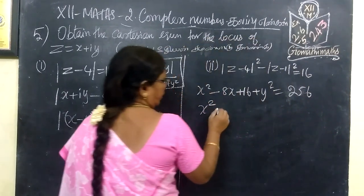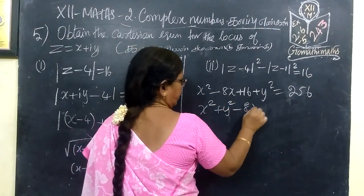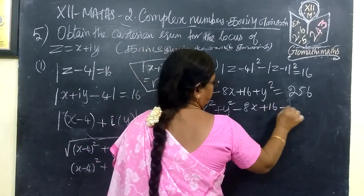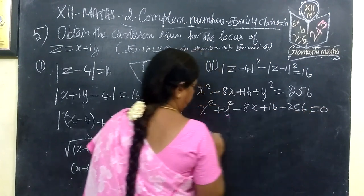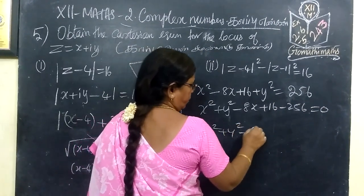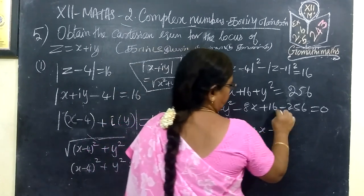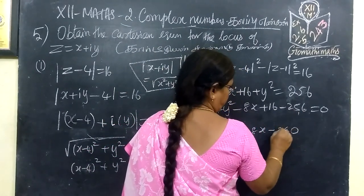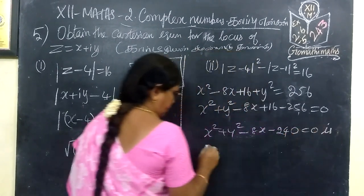Expanding: x squared plus y squared minus 8x plus 16 minus 256 equals 0. So x squared plus y squared minus 8x minus 240 equals 0. This is the required Cartesian equation for the first part.